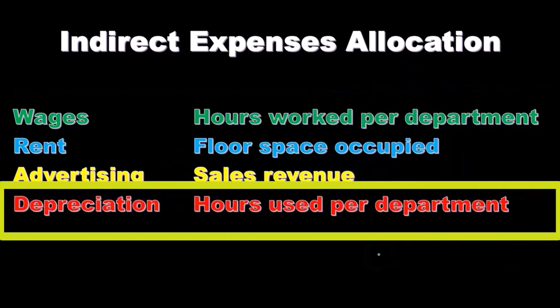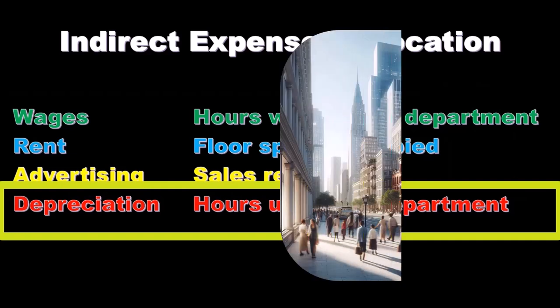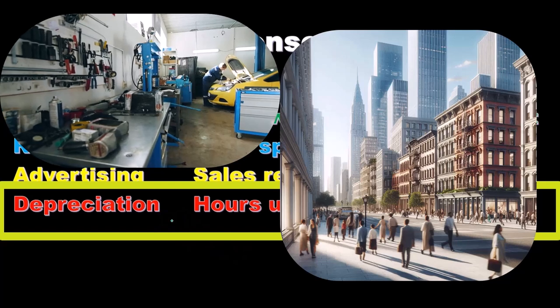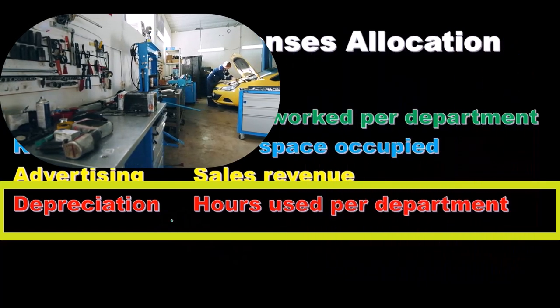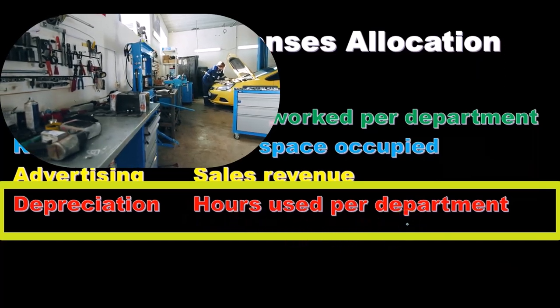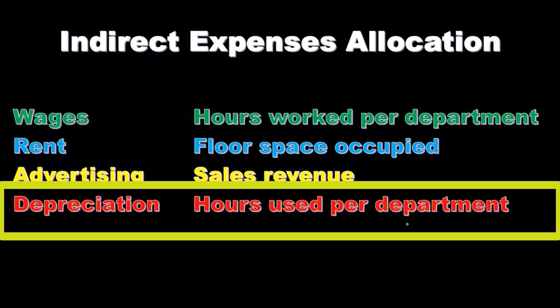For depreciation — say depreciation on equipment used by multiple departments — we might use hours used per department as the activity base. We'd track the hours each department uses the equipment, add up the total hours, and perform a ratio analysis comparing hours used in one department versus another. We then apply out the depreciation to the appropriate department based on that ratio analysis.